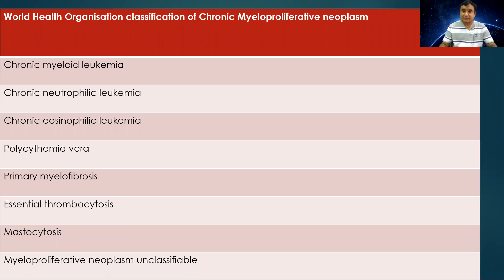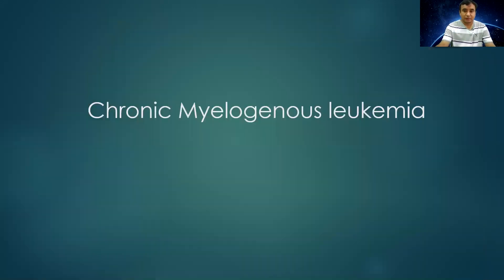The World Health Organization divided chronic myeloproliferative neoplasms into different types. Number one is chronic myeloid leukemia, which we are going to discuss today. Second is chronic neutrophilic leukemia. Third is chronic eosinophilic leukemia. Fourth is polycythemia. Then primary myelofibrosis, essential thrombocytosis, mastocytosis, and myeloproliferative neoplasm unclassifiable. This is an area from which exam questions are frequently asked.